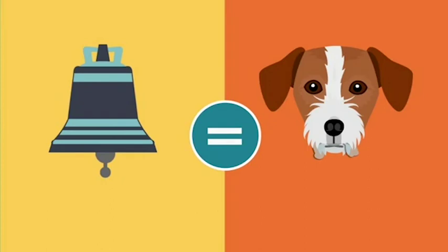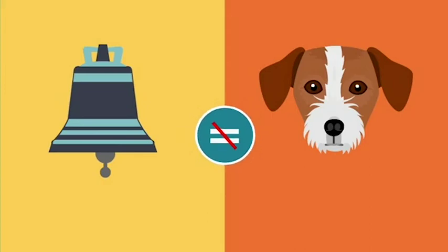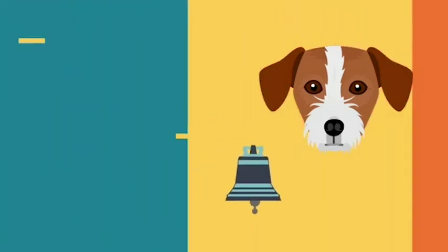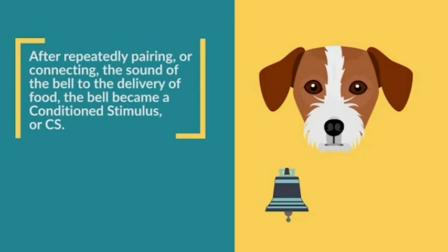The bell was a neutral stimulus, or NS, at the beginning of the experiment, because it didn't mean anything to the dogs. However, after repeatedly pairing or connecting the sound of the bell to the delivery of the food, the bell became a conditioned stimulus, or CS.